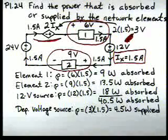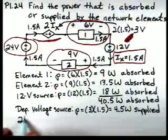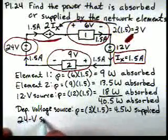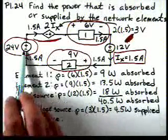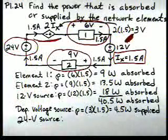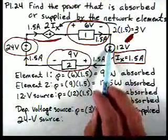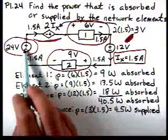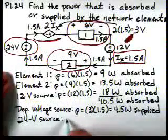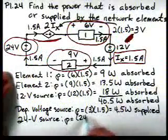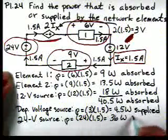Our last element is the 24-volt source. The current is entering the minus terminal and coming out of the positive terminal — that's opposite to our passive sign convention. Comparing with the 12-volt source where current entered the positive and left the negative, here it's reversed. So this source is also supplying power: P equals 24 times 1.5, which is 36 watts supplied.